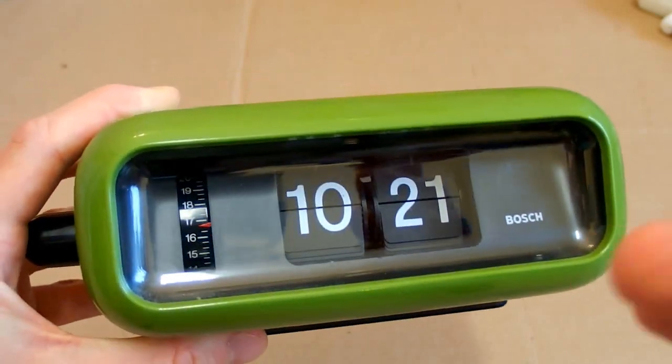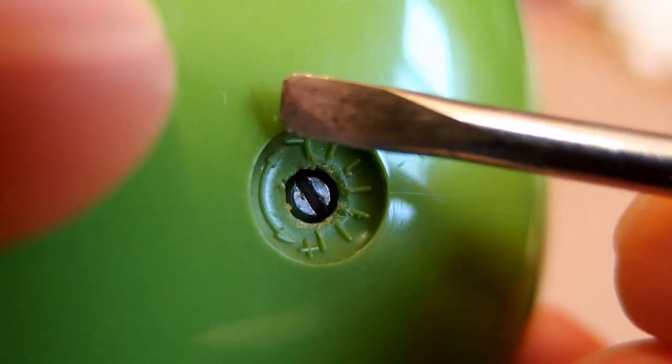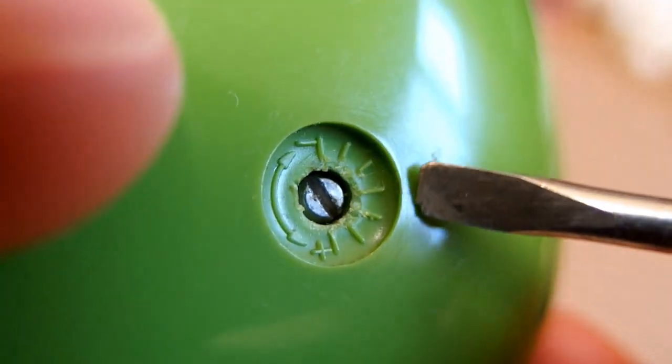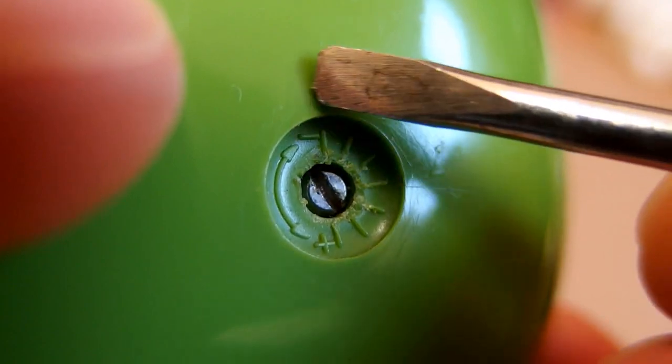It's actually running a little bit too fast, but it can be adjusted. Here is the adjustment knob. Turning it to the right or clockwise makes it slower, and turning it to the left or counterclockwise makes it faster.